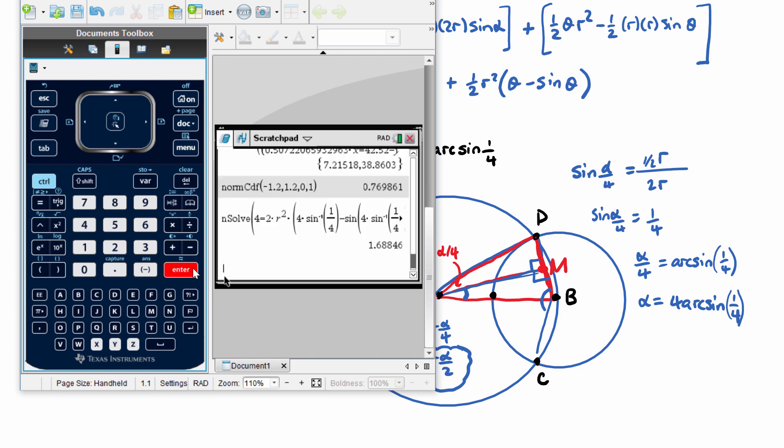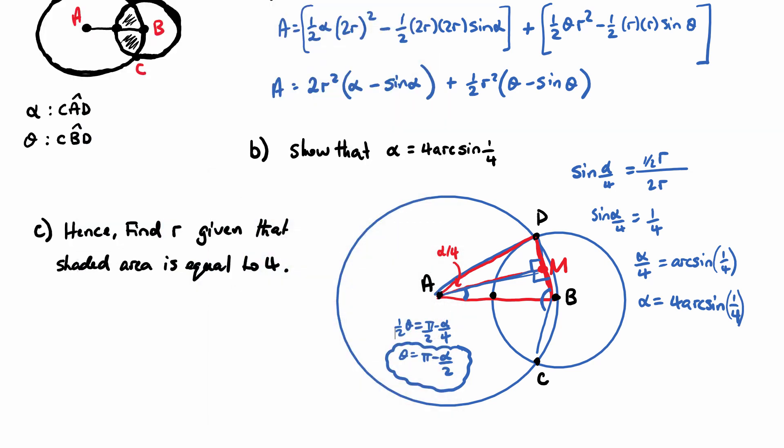Okay, so we get 1.69 for R. So after all of that, we get using GDC, R equals 1.69.